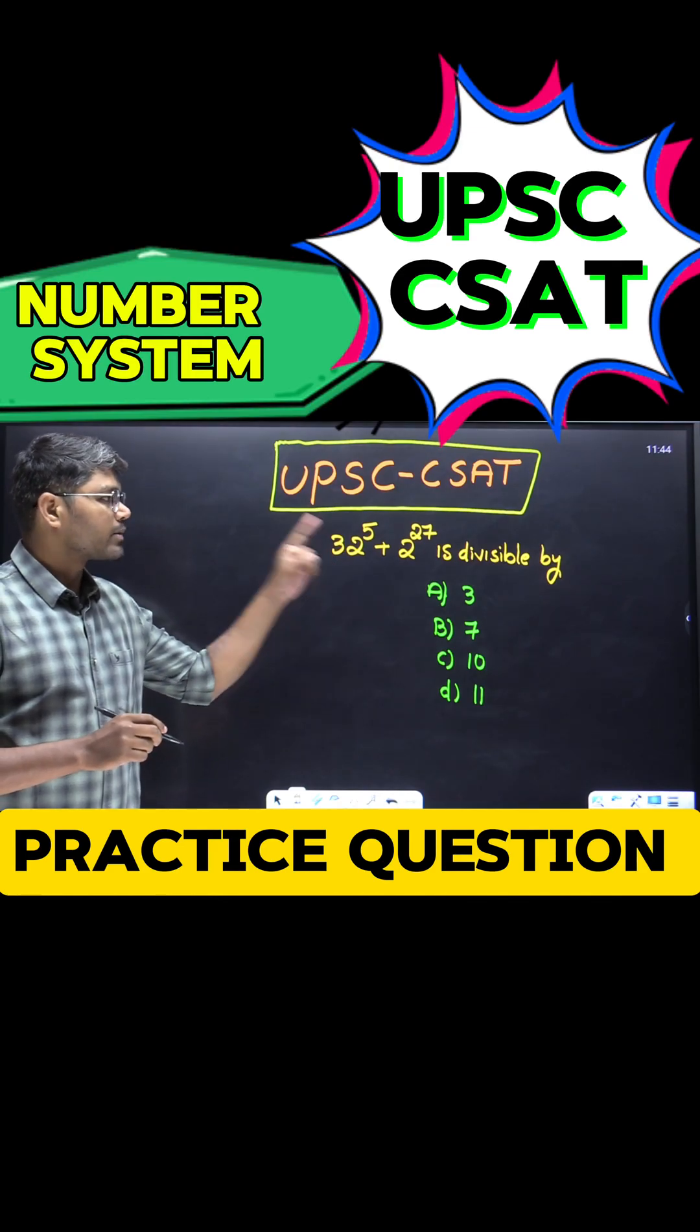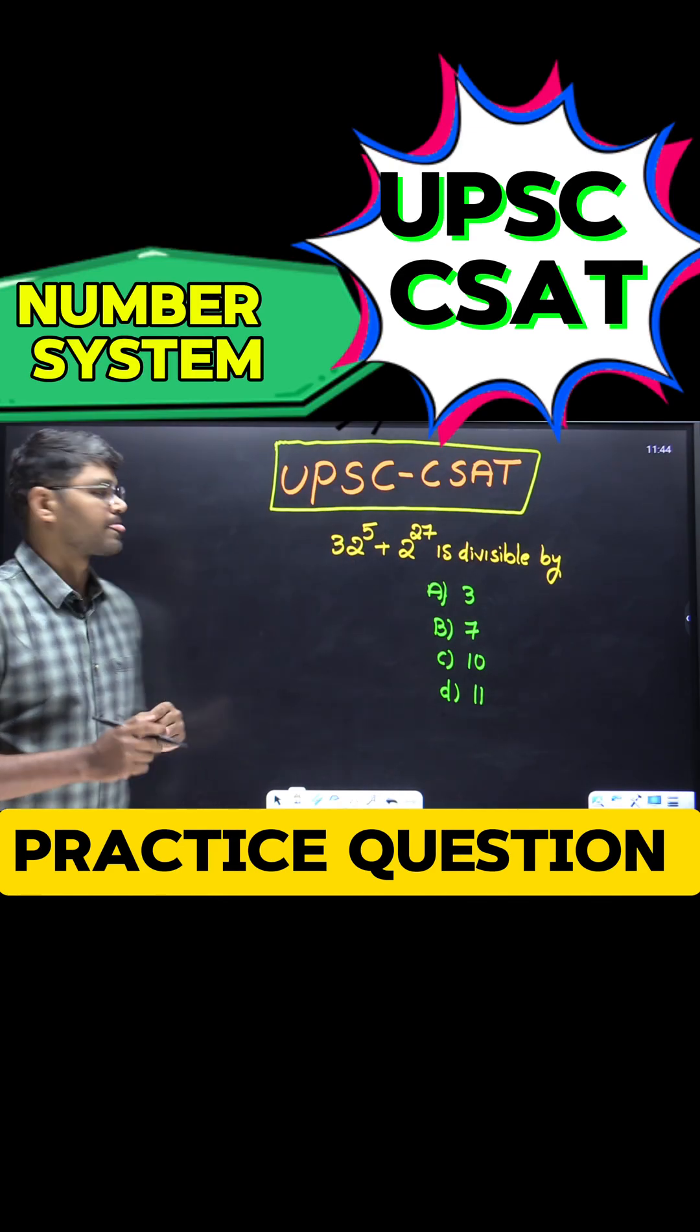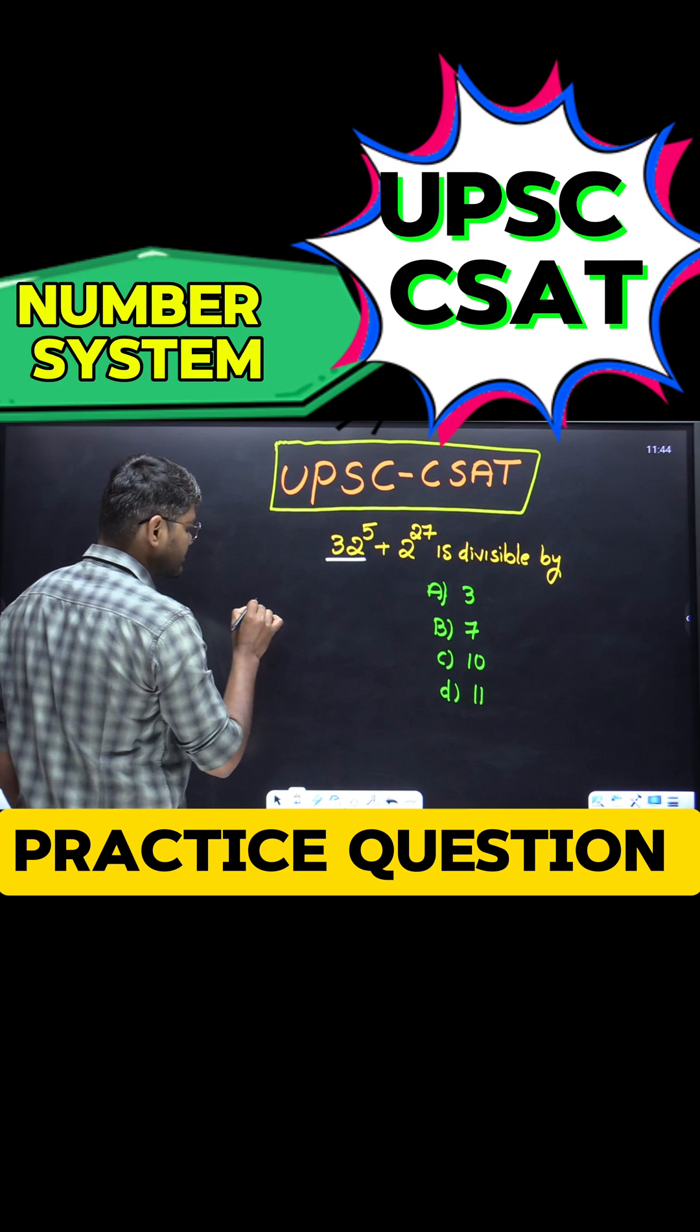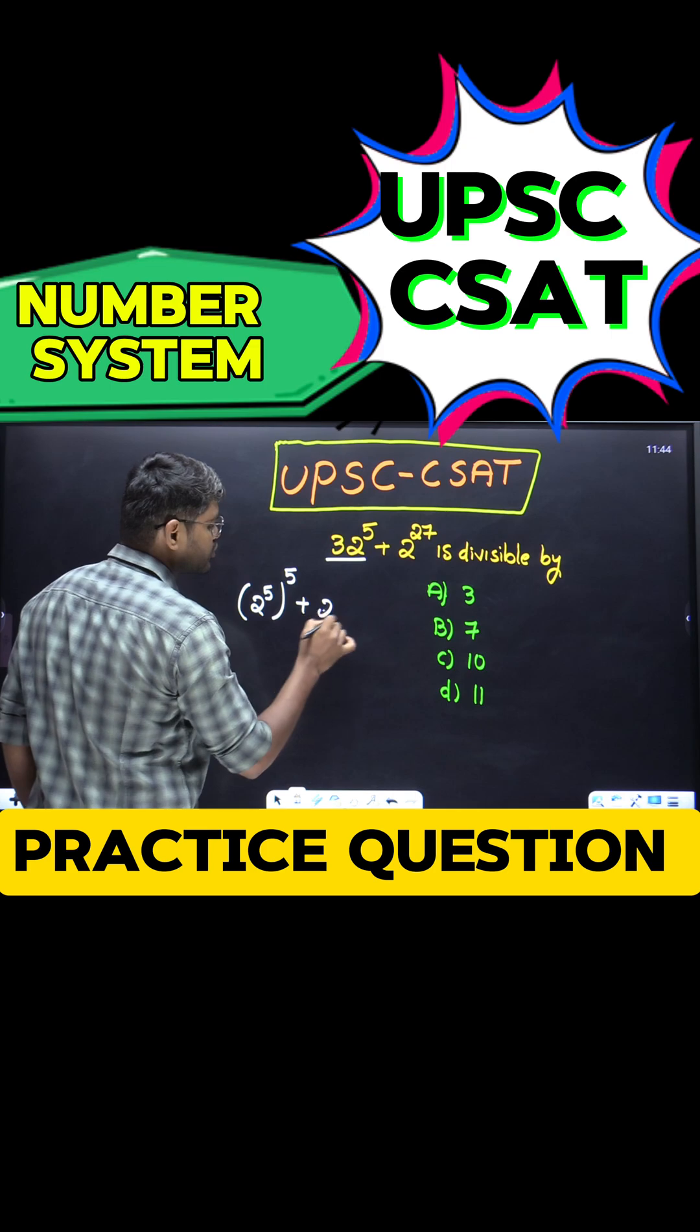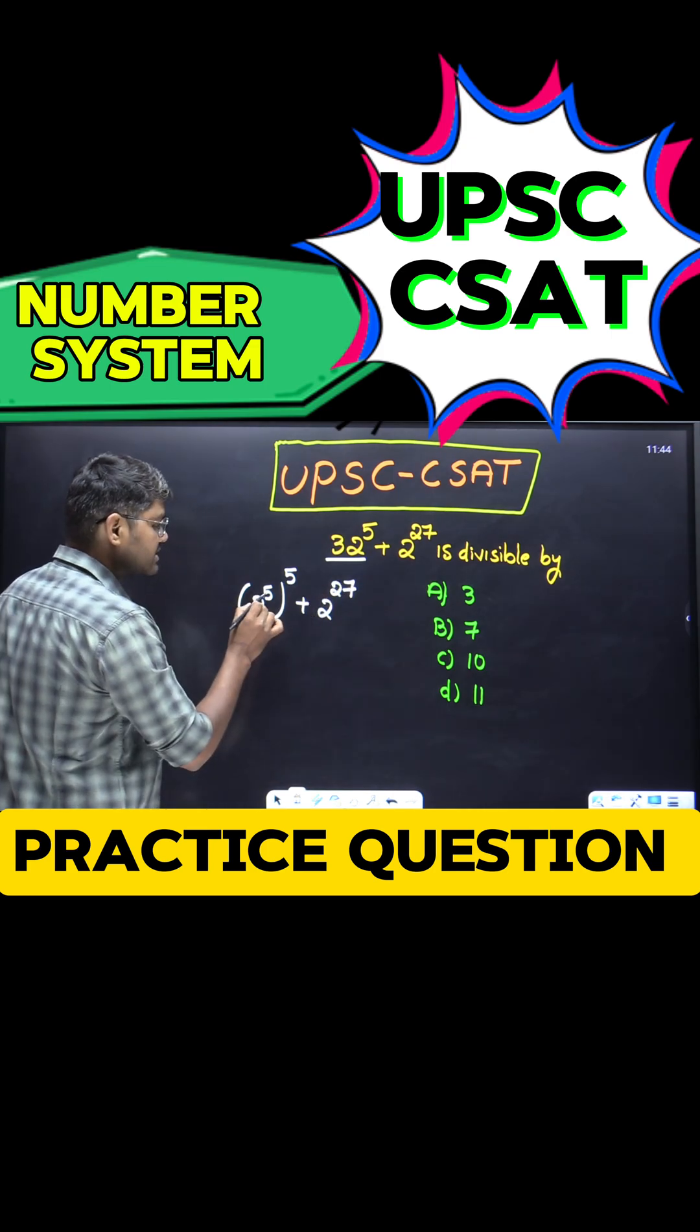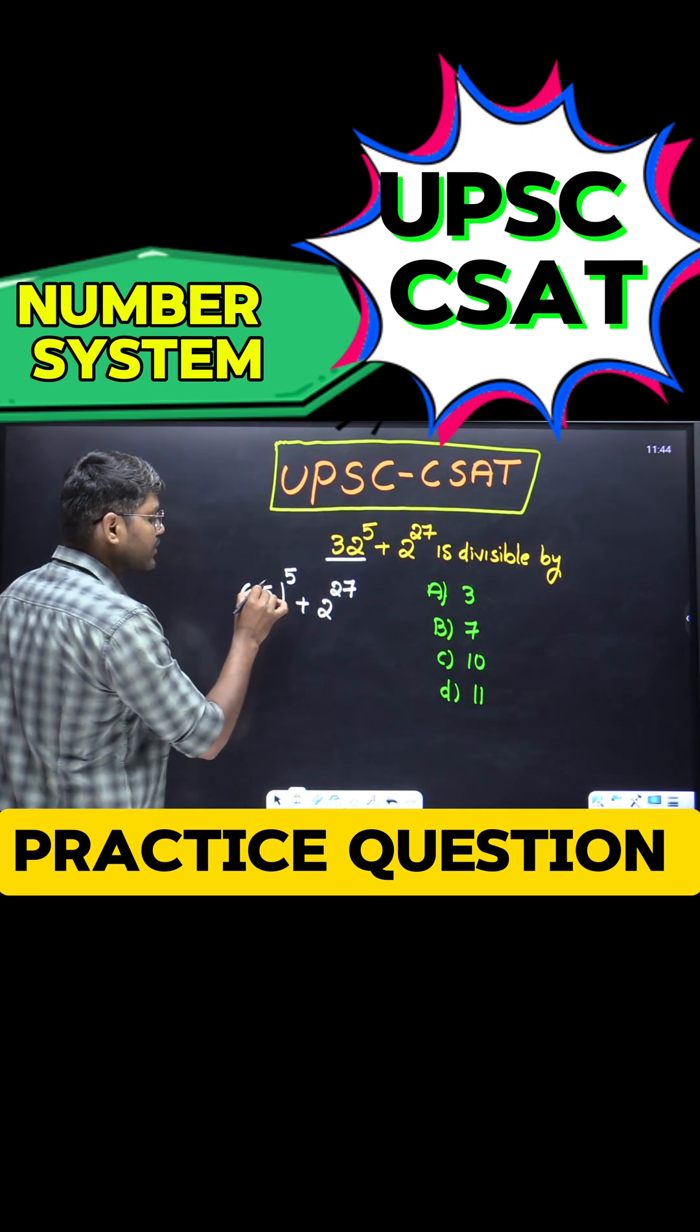32^5 + 2^27 is divisible by. 32 can be written as (2^5)^5 + 2^27. This is in the form of (a^m)^n.